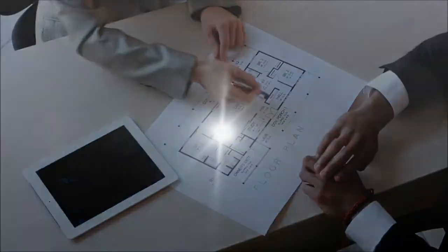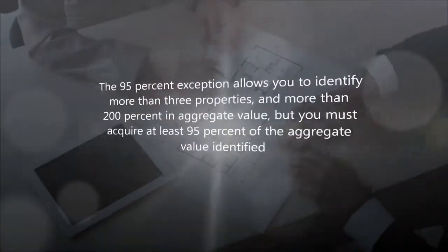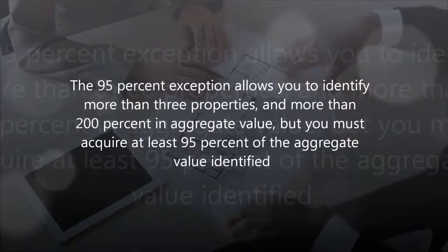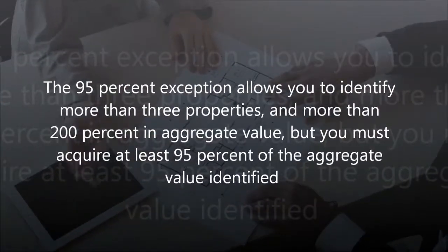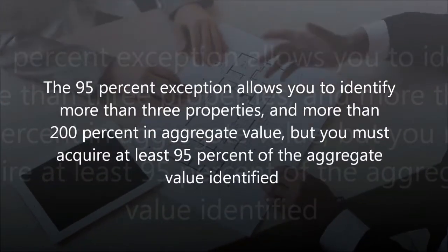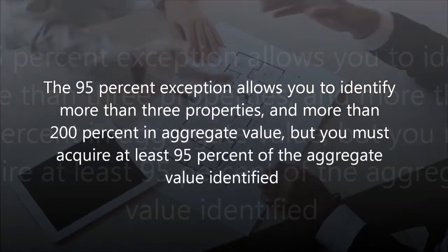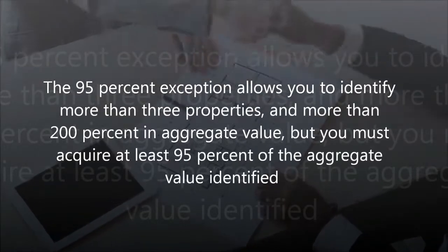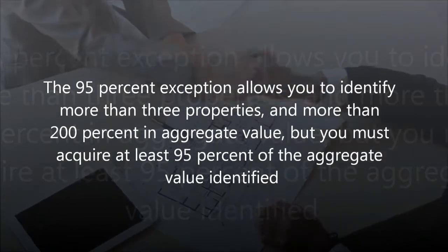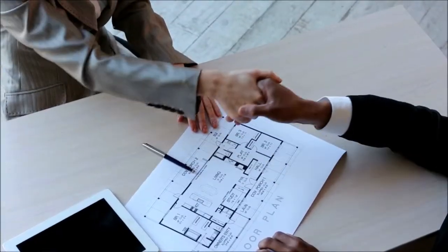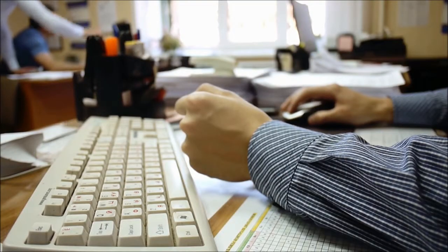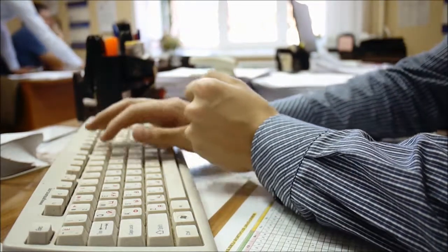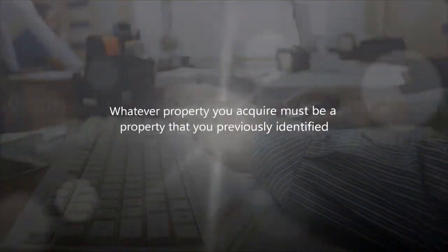The exception is known as the ninety-five percent exception, meaning you can identify more than three properties and the property is valued at more than two hundred percent of the property you sold, but when you do, you must acquire at least ninety-five percent of the total value of the property identified. So it might as well be the one hundred percent exception. Also, whatever property you acquire must be a property that you previously identified.